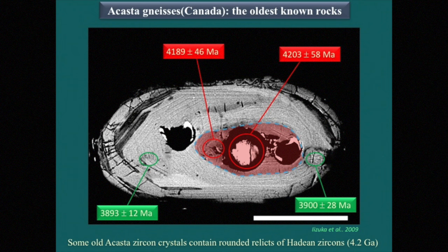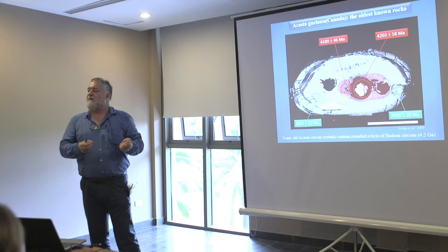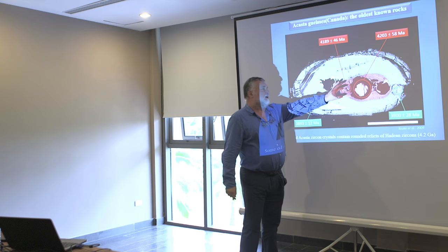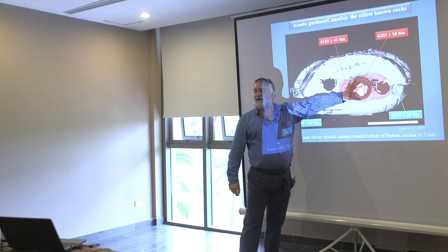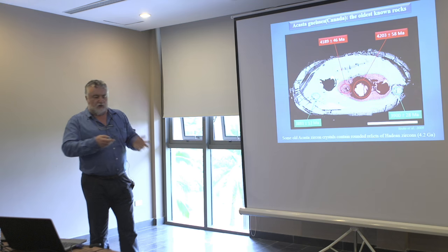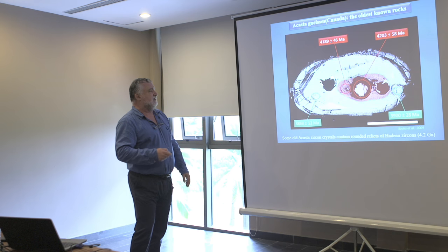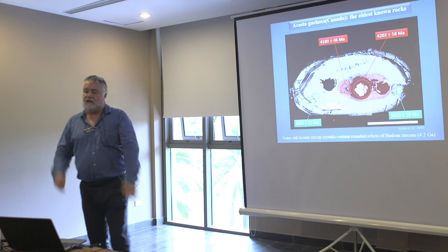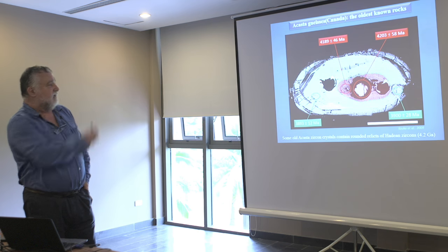This is very important. It says that in this place in Canada, at 4 billion years we have the Acasta gneiss, but 200 million years before, continental crust already existed there. That means during the Hadean there were rocks of granitic composition. We do not know these rocks — they disappeared, they were eroded, they remain only as cores of zircon crystals. But there were rocks older than this.